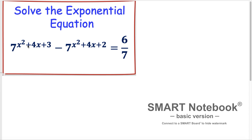The exponential equation to solve is: 7 to the exponent (x² + 4x + 3) minus 7 to the exponent (x² + 4x + 2) is equal to 6 divided by 7.